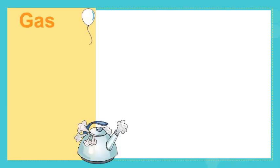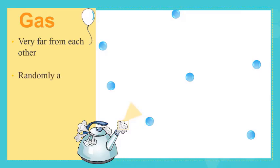Finally, the particles of gas. If we consider the particles of the vapor coming out of the teapot, we can easily notice that particles are very far from each other and randomly arranged because of the large spaces between them. So they are very far from each other and randomly arranged. And because the spaces between them is very large, the gas particles can move freely and in all directions.